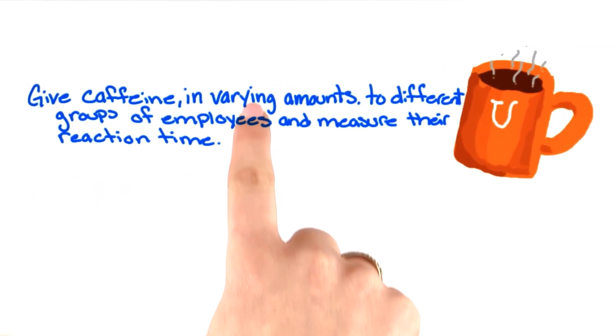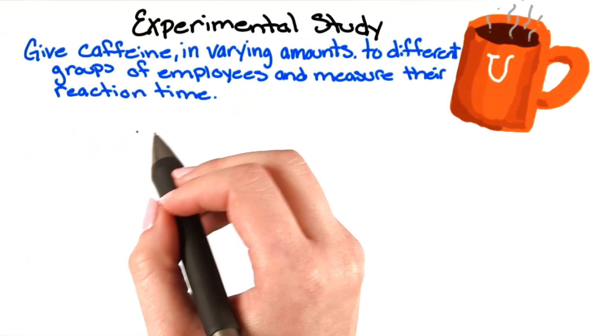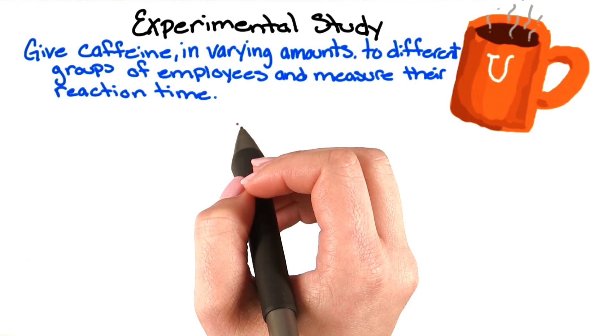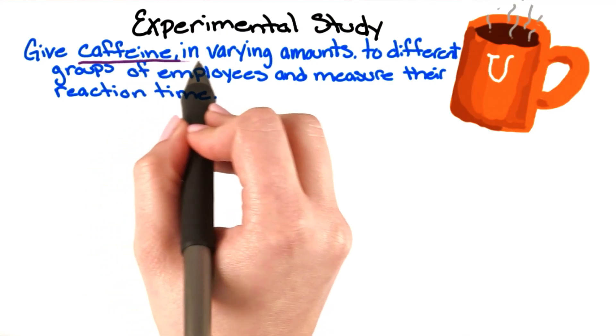The second option is what we call an experimental study. Hidden in this one sentence are aspects that are universal to all experimental studies we do in psychology. Let's start with caffeine in varying amounts.